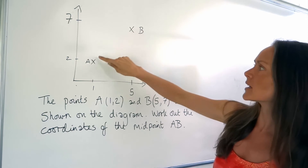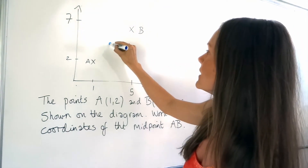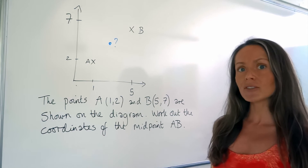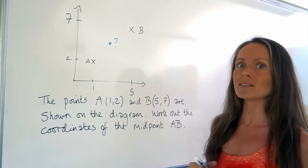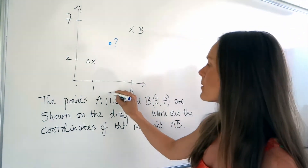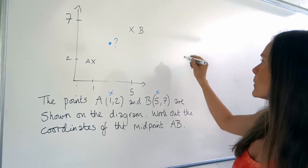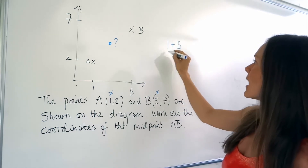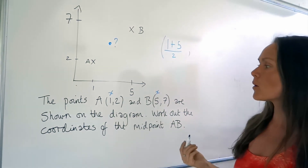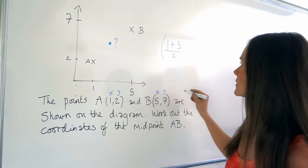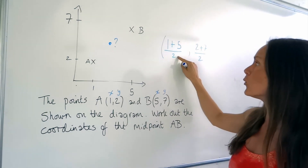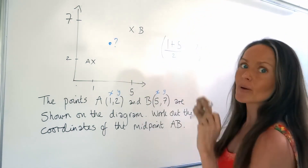So here's the line AB — this invisible line here. The midpoint will be around here somewhere, but we need to work out the exact coordinates. In order to do that, all you have to do is add the two x-coordinates together of the two endpoints and divide by 2, and then do exactly the same thing with the y-coordinates. Remember, the x-coordinate is always the first number, so we're going to add those together and divide by 2. That will work out the x-coordinate of the midpoint. Then we do exactly the same with the y-coordinates — add 2 and 7 together and divide by 2. You're always adding the coordinates together and dividing by 2 because that's how we end up in the middle at the midpoint.